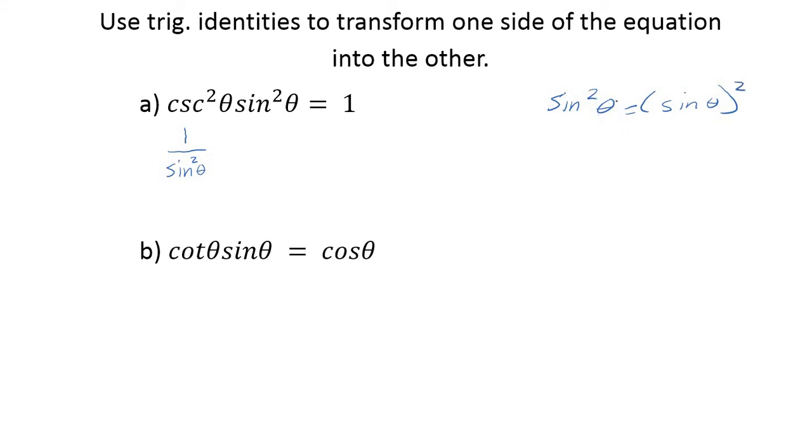So instead of writing the squared after it, it would kind of look like maybe the angle was squared, and so we need to be careful. This is just the convention that we use. We'll put the square—it looks like it's on the trig function, but it means the whole function is squared.